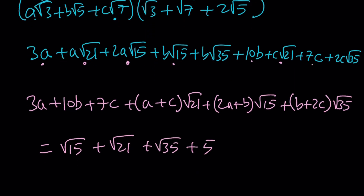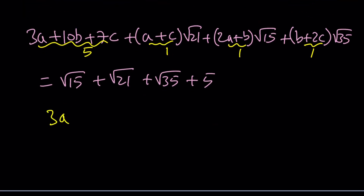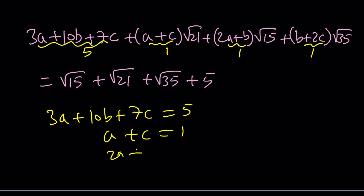How do we get 5? It's the only integer, so 3a plus 10b plus 7c equals 5. The coefficient of root 21 is 1, root 15 is 1, and root 35 is also 1. That gives us a system of equations: 3a plus 10b plus 7c equals 5; a plus c equals 1; 2a plus b equals 1; and b plus 2c equals 1.